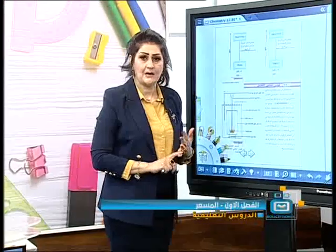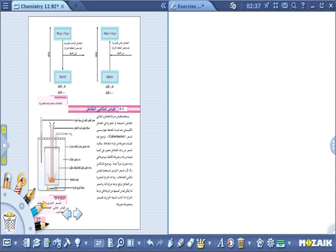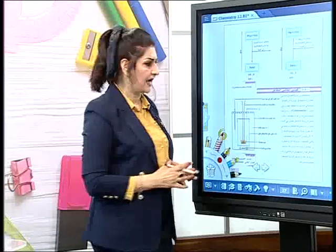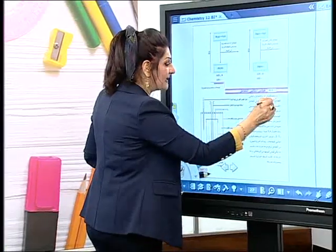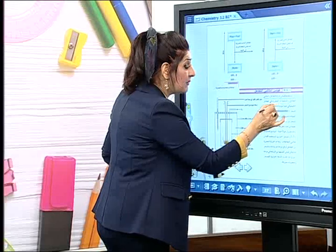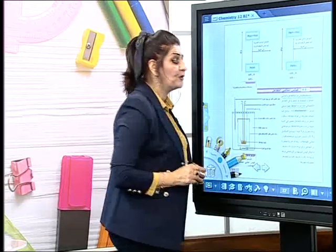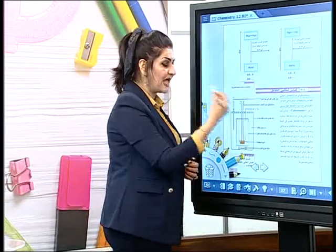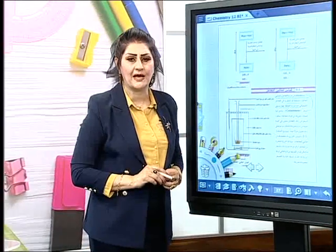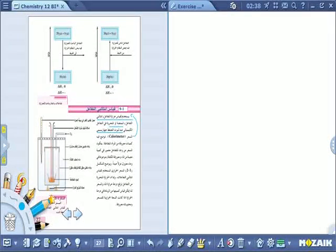ما هو المسعر وما هي محتوياته وبماذا يُستخدم؟ موضوع الدرس: المسعر. المكتوب عندنا هو قياس إنثال التفاعل. إذن كيف يمكن قياس كمية الحرارة؟ أدنى جهاز يُستخدم لقياس كمية الحرارة يُدعى المسعر. يُستخدم لقياس حرارة التفاعل أو إنثال التفاعل، سواء كانت ممتصة أو متحررة من تفاعل كيميائي بثبوت الضغط.